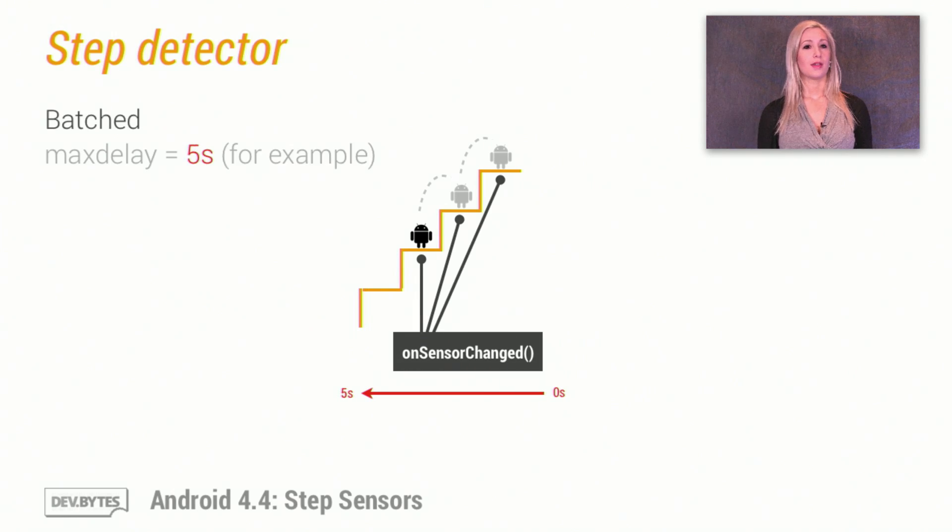On the other hand, if you don't need real-time reporting, you can allow events to be batched by providing a higher maximum delay. You'll still get one event per step, but in this example, the events could come up as much as five seconds afterward. This allows for optimization at the sensor level. So be a good Android citizen and only ask for events as quickly as you actually need them.